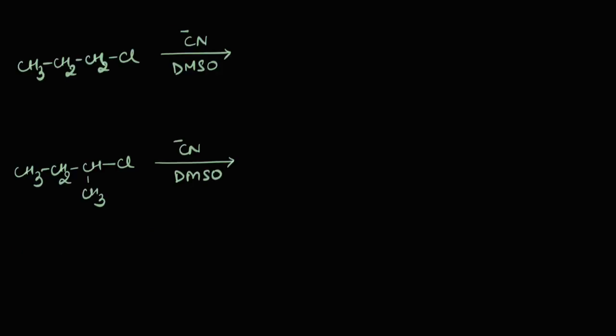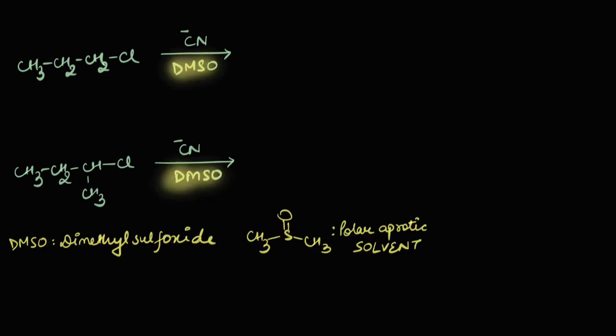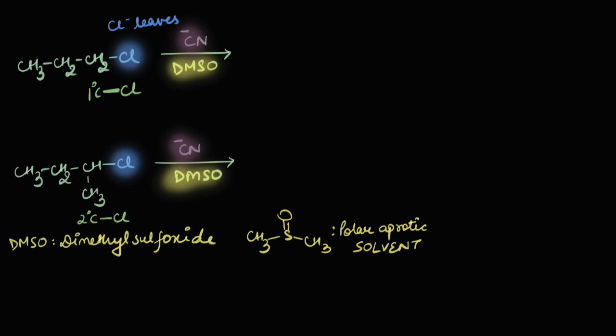Let's say we are asked to compare the rates of these two reactions which occur via SN2 mechanism. Before we begin, what is DMSO? DMSO is dimethyl sulfoxide — it's a polar aprotic solvent. The leaving group in both cases is the same: Cl⁻ is going to leave, and the attacking nucleophile is CN⁻ in either case. Focusing on the substrate: in the first case, a 1° carbon is attached to the leaving group, while in the second case, a 2° carbon is attached to the leaving group.